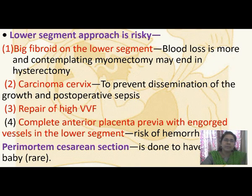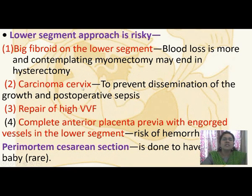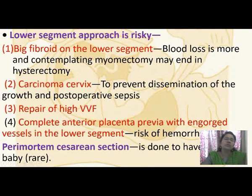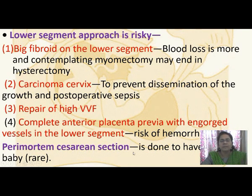Other indications for classical caesarean section include: lower segment approach being risky due to a large fibroid on the lower segment causing more blood loss and risk of myomectomy ending in hysterectomy; carcinoma of the cervix to prevent dissemination; repair of high vesicovaginal fistula; complete anterior placenta praevia with engorged vessels in the lower segment; and perimortem caesarean section — done when the mother is dead and we need to save the baby — which is usually done by the upper segment approach.